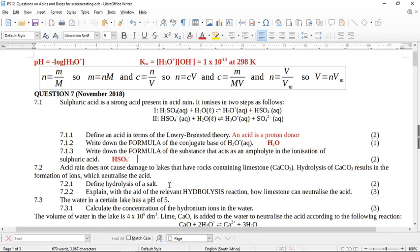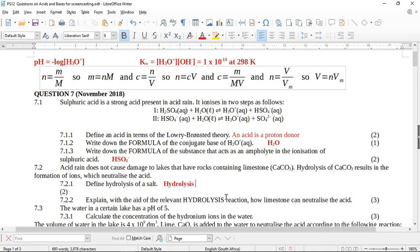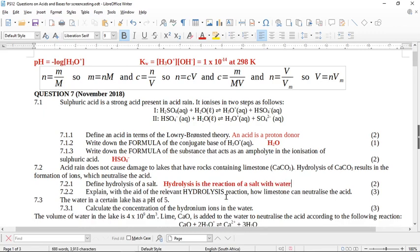It says to you, acid rain does not cause damage to lakes that have rocks containing limestone, calcium carbonate. Hydrolysis of calcium carbonate results in the formation of ions which neutralize the acid. Define hydrolysis of a salt. So hydrolysis is normally the reaction with water. So we say here, hydrolysis is the reaction of a salt with water. So in general, hydrolysis is the reaction with water, but they've said define hydrolysis of a salt.